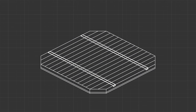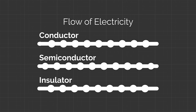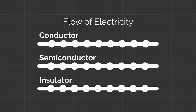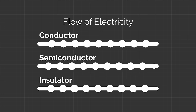Let's take a closer look. The active part of a solar cell is a wafer made of semi-conductive material, typically silicon. A semiconductor is a type of material that normally doesn't conduct electricity well, but it can be made more conductive under certain conditions.